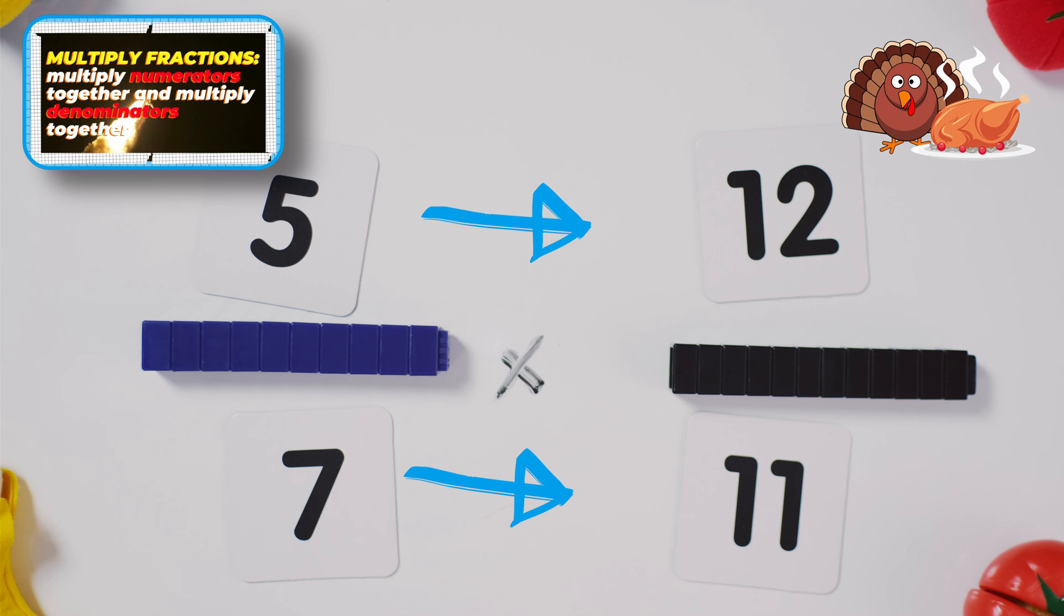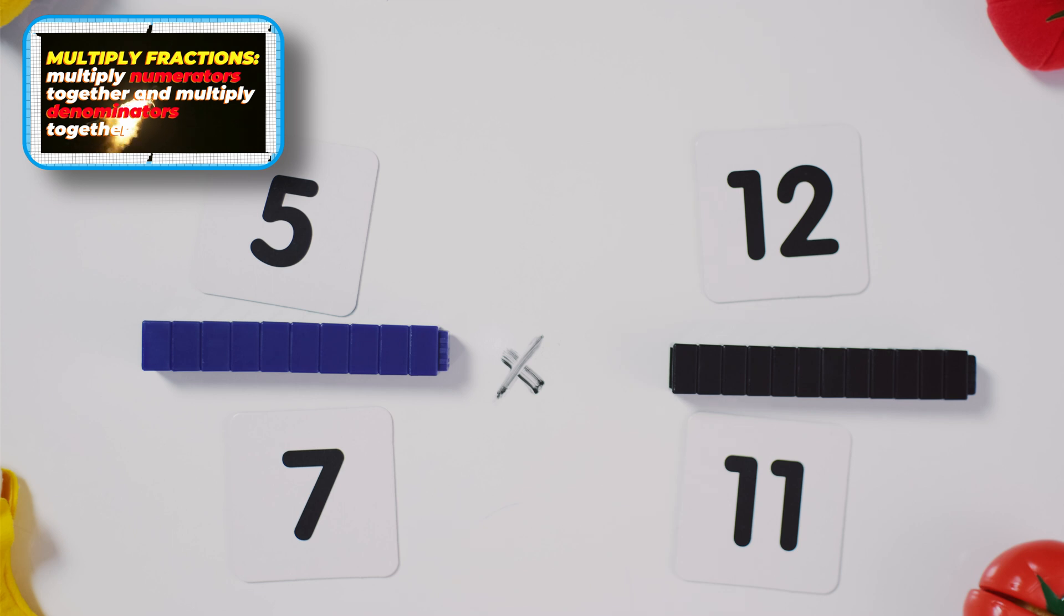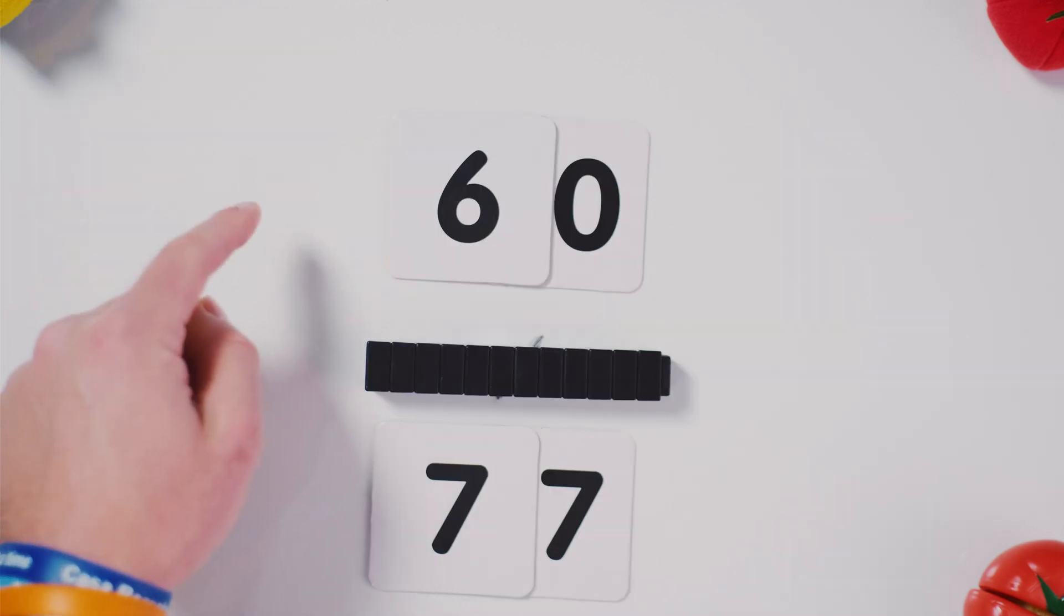Numerator, denominator, five by twelve, that's gonna give us sixty. Seven by eleven, that's gonna give us seventy-seven. And so you see we have sixty out of seventy-seven or sixty seventy-sevenths.